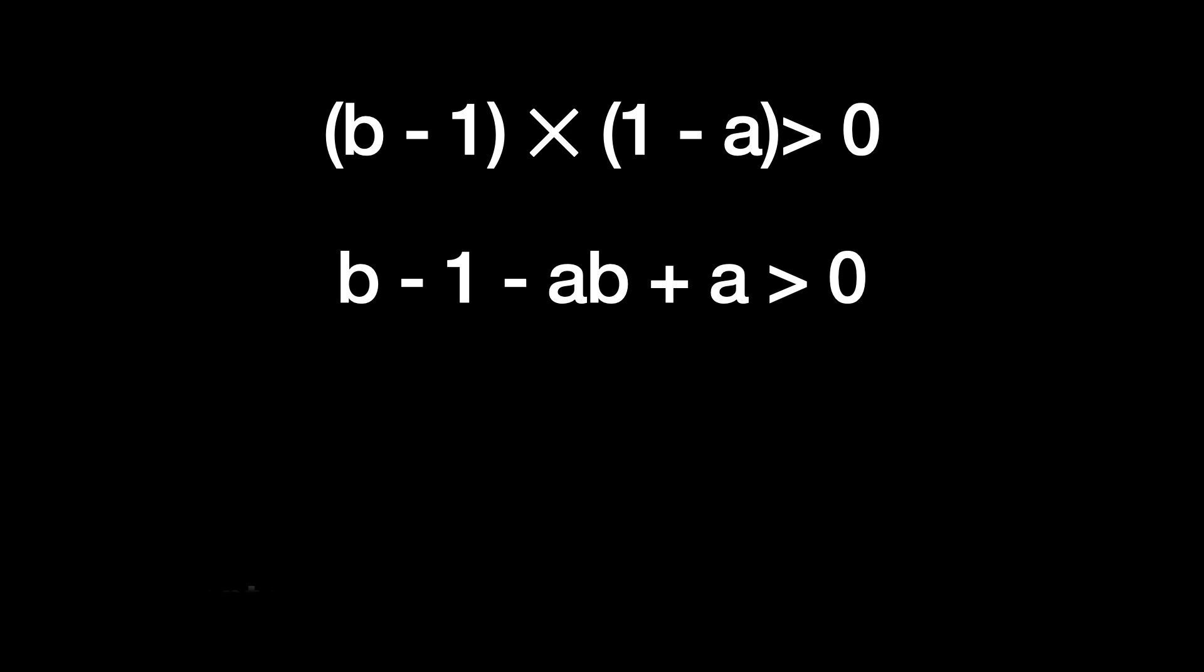Let's multiply it out. So, we have B minus 1 minus AB plus A is greater than 0, or A plus B is greater than 1 plus AB. But A times B is given to be 1. So, we have the final conclusion that A plus B is greater than 2.